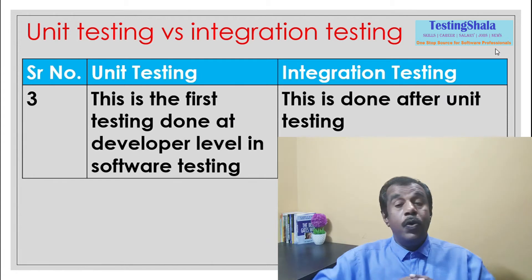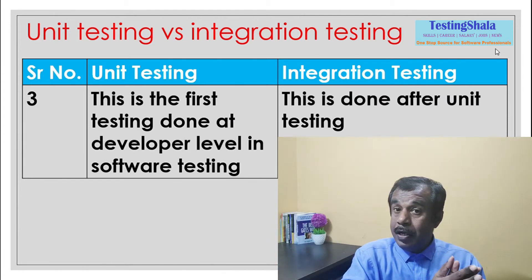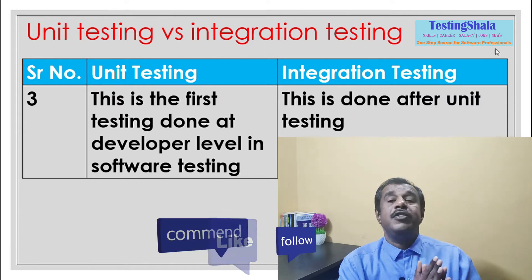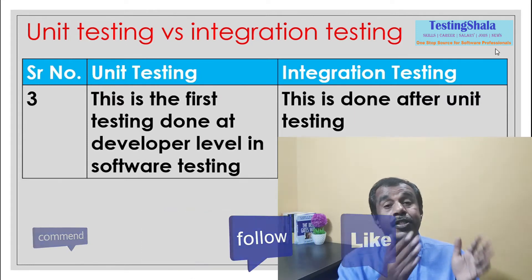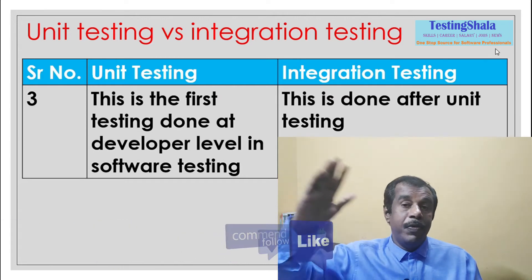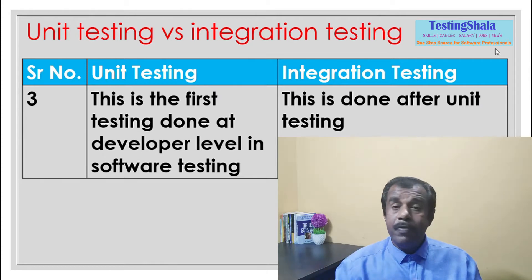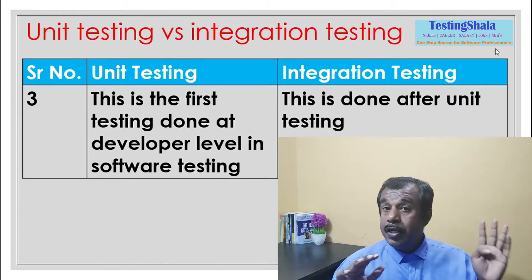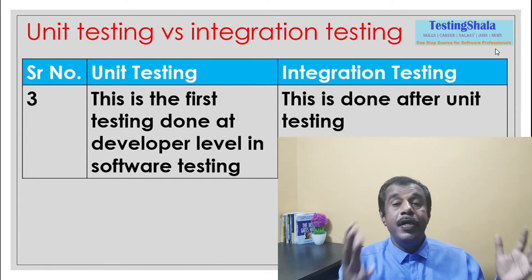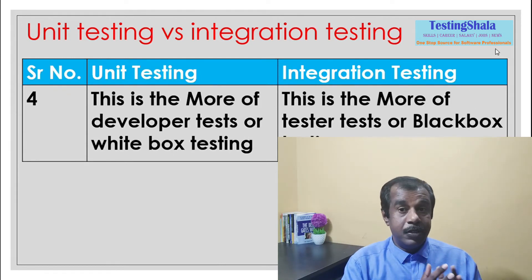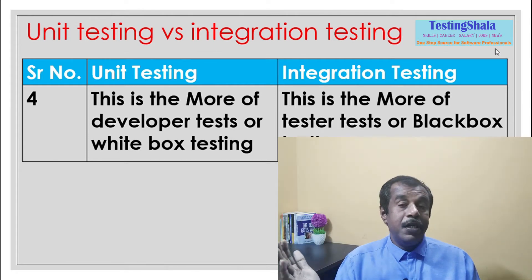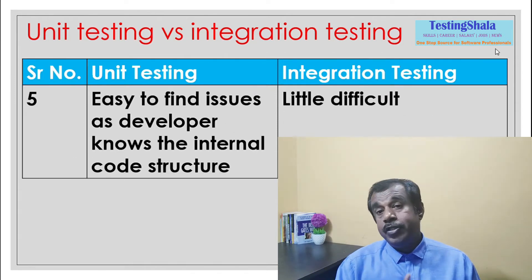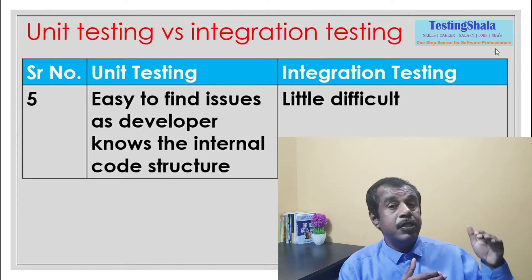The third difference relates to the levels of software testing. The first level of testing is unit testing, and followed by that is integration testing, which is the second type. The fourth major difference is that unit testing is also called glass box testing or gray box testing, whereas integration testing is called black box testing.